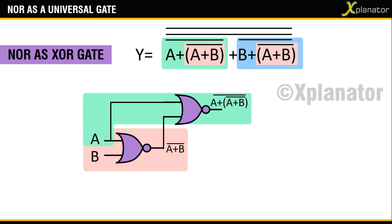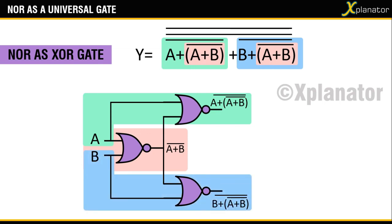The same sequence will apply for the second term which is shown in blue. You need input B along with the second input as A plus B the whole bar. Draw the same and your output is going to be complement of B plus A plus B the whole complement.